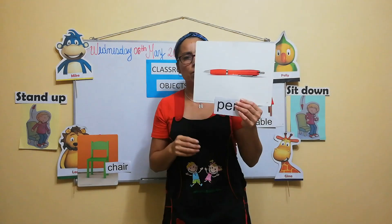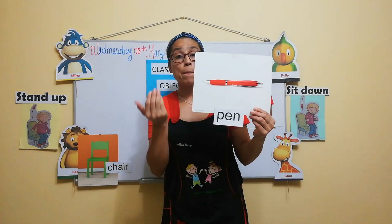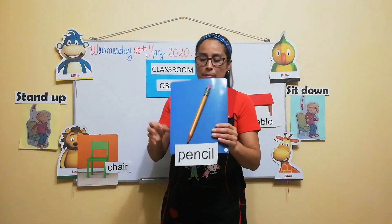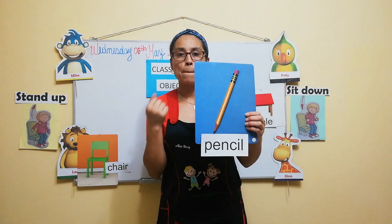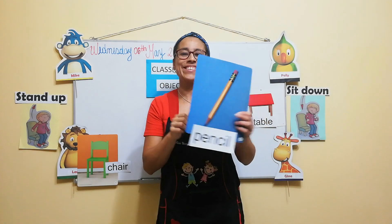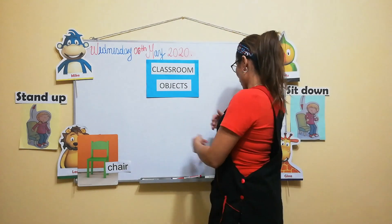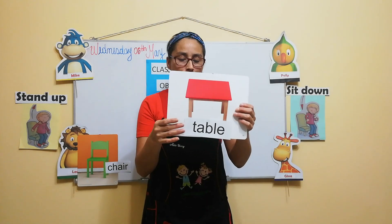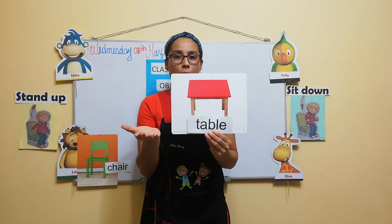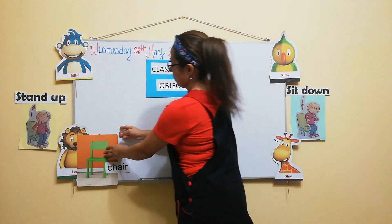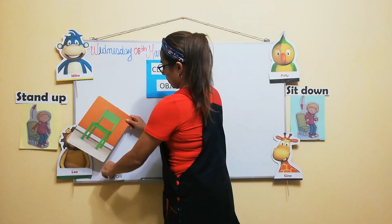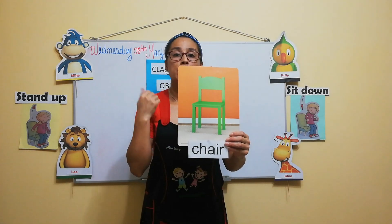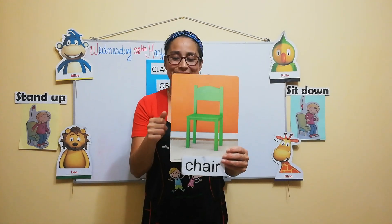Look. Pen. Pen. Pen. Yes. Okay. Pencil. Pencil. Yes. All right. Another thing is... Repeat. Table. Table. Table. Yes. And it's a chair. Chair. Yes. Very good. Okay.